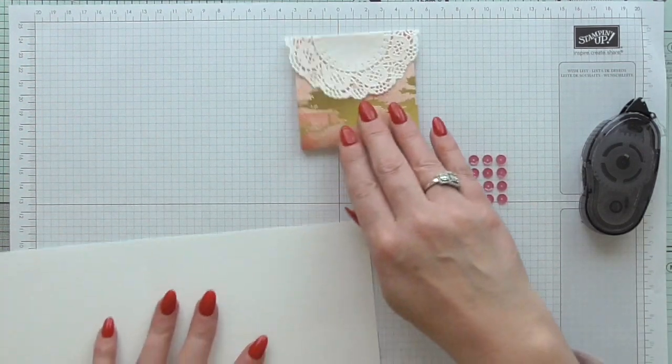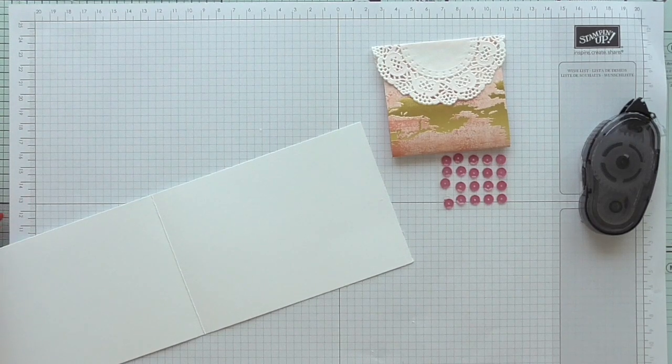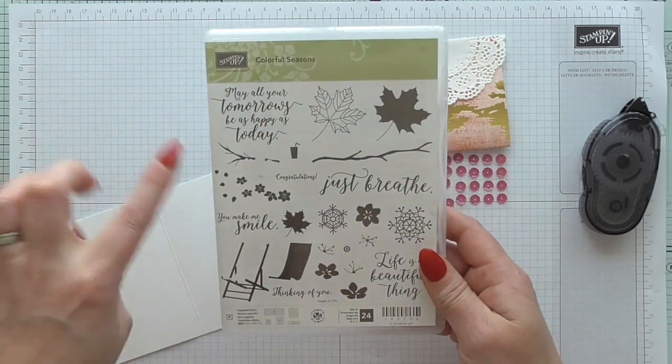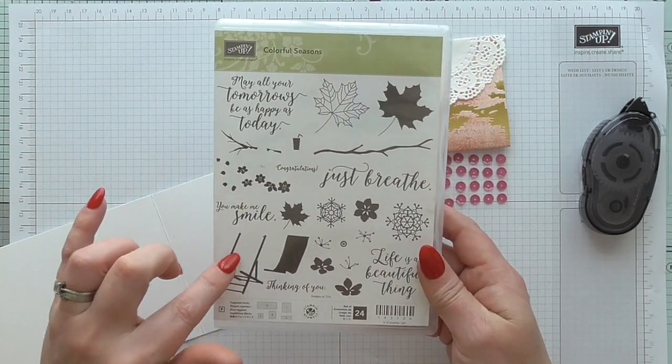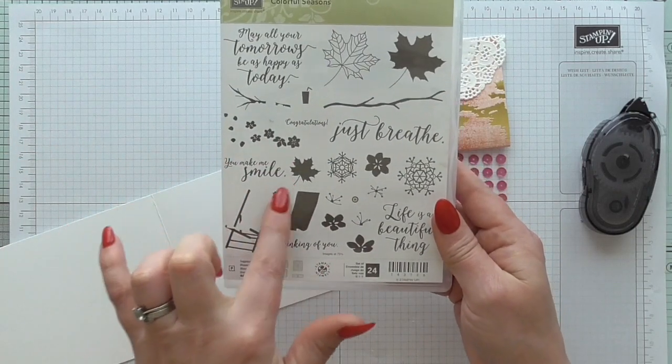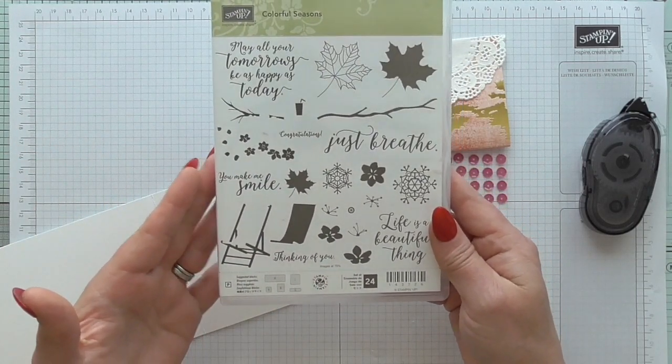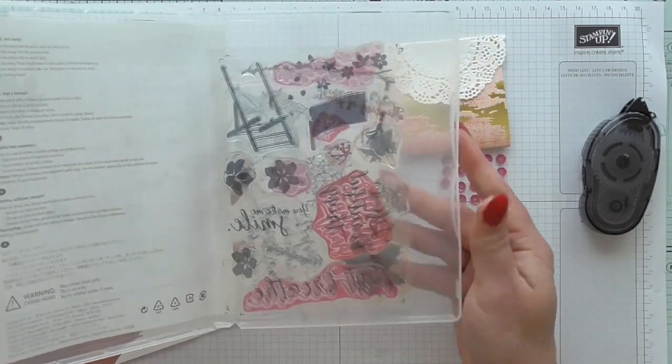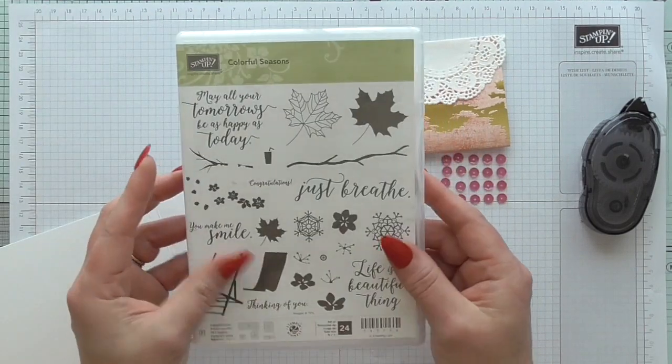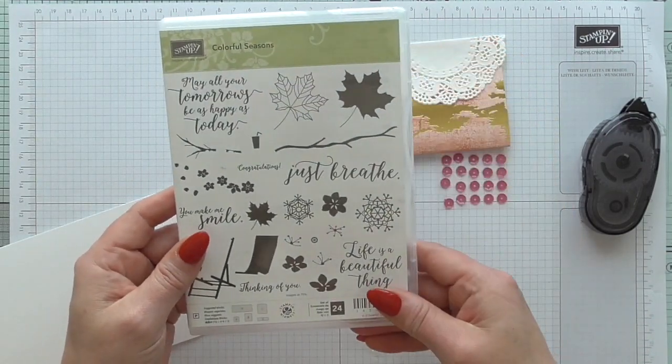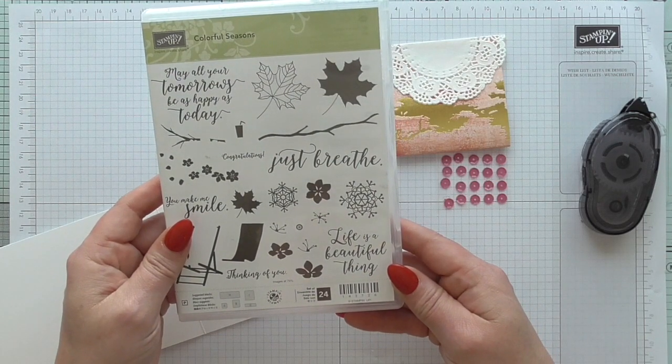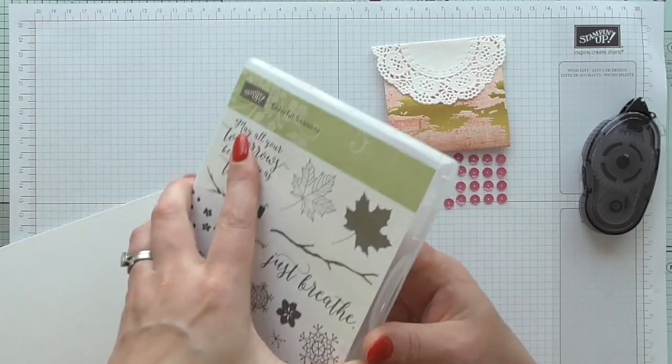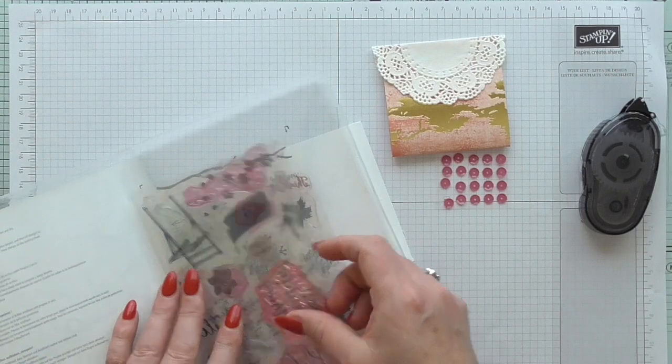So we're going to do some stamping. I'm using this card base that I cut in error and I'm going to use the Colorful Seasons stamp set, which is absolutely beautiful. I'm going to be doing some more work with this. Now originally I used this sentiment here which says 'you make me smile,' but upon further investigation I seem to have misplaced it and it's not in my box. So I'm going to have to go through all of my stamp sets, I must have put it in the wrong box. So we're going to use a different one and we're going to have 'thinking of you' instead. Okay, so let's have a look. I think we're having that one.